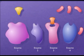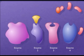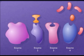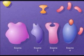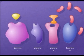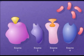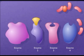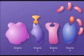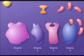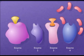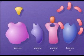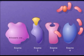In feedback inhibition, the end product of the pathway reacts with the first enzyme that is unique to the pathway. The reaction occurs at a site on the enzyme that is different from the active site, called the allosteric site.